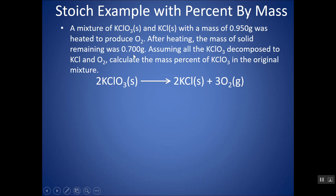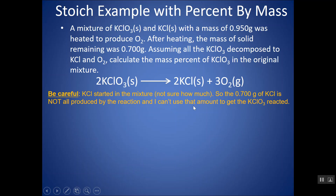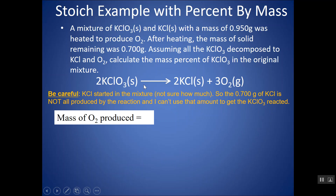One common mistake here would be to say: 0.70 grams — if all the KClO3 was used up, then this 0.70 grams must be just KCl, so I'm going to turn it back into KClO3 with stoichiometry. But be careful, because this 0.70 grams of KCl was not all produced by the reaction — some of it was there to start with in the mixture. So I can't use the 0.70 grams in stoichiometry. I can, however, find the amount of gas created by subtracting the two gram amounts — my original mixture minus the KCl that was left — and figure out how much gas was produced.